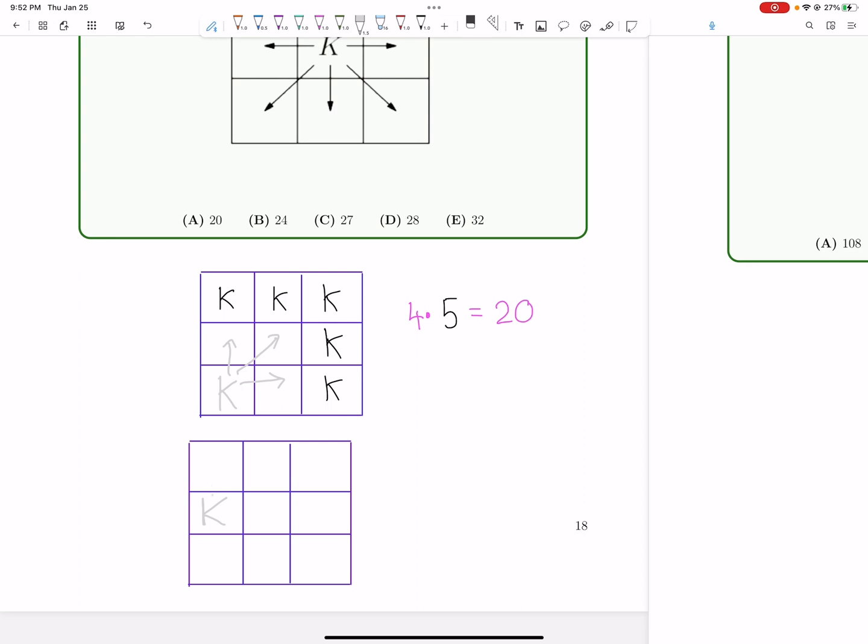So if the white king is here, it attacks all of these squares. And as a result, we see there's three left. So we have three choices for the black king. Okay, and then we multiply by four because there's four different edges that we can place the white king in. And this gives us 12. Cool.